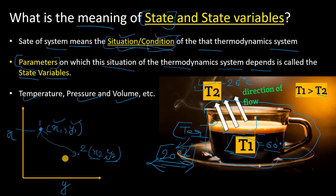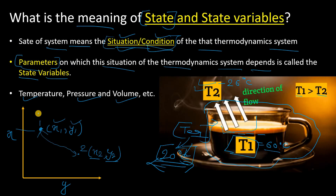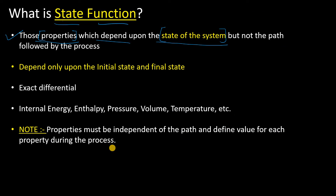Now we will discuss about the state function. What is a state function? Those properties which depend upon the state of the system — where point one and point two are called states and the route between them is the path — those properties which depend upon the state of the system but not the path followed by the process are called state functions. State function is also known as the point function.